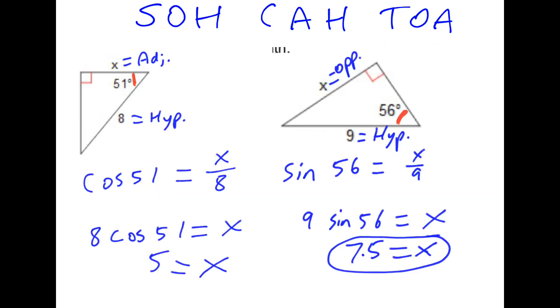So if we go back to SOHCAHTOA, here's a couple problems where we start with one angle and one side length and we try to figure out the other side length. Relative to that angle, we're looking at an adjacent side and a hypotenuse side. That's how we know we're going to use cosine because cosine involves adjacent and hypotenuse. So we can say the cosine of 51 is equal to X over 8. Multiply both sides by 8 and plug this into our calculator to get our answer that X must be 5 when you round it.